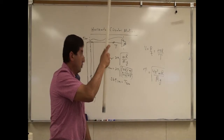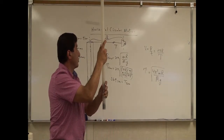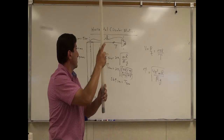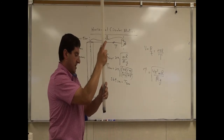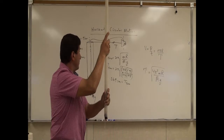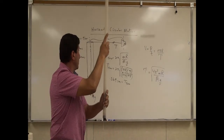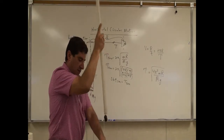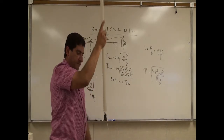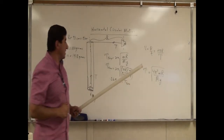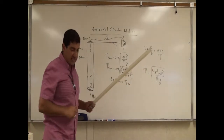Counting 20 revolutions: 0, 1, 2, 3... 20. So 20 cycles took 18.48 seconds.